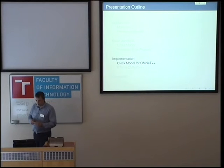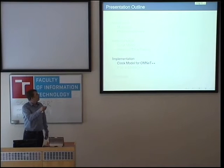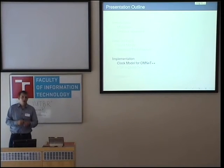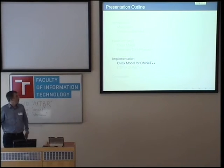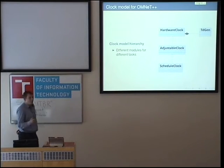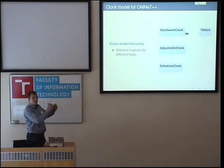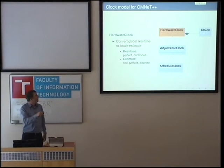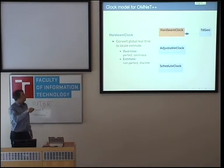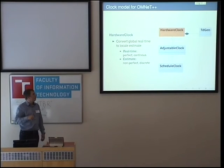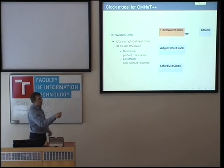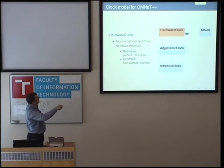Now I will tell you how I implemented the clock model. Basically, I needed a similar interface as OMNET provides with the sim time and the schedule API, but I needed it related to a local clock, not the perfect global time. I followed the usual divide and conquer strategy, assigning different models different tasks. First of all, I implemented a class called a hardware clock. The purpose of this model is to transfer the perfect continuous real time to a local non-perfect discrete estimate of time — basically implementing what the quartz oscillator would do. To get noise, I separated the generation of noise from the time transformation.